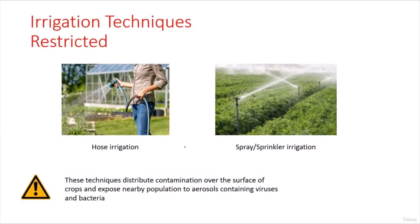Now let's check what irrigation techniques we can use when irrigating with treated wastewater. First, what are the restricted irrigation techniques? These are not purely restricted, but you are not advised to use hose irrigation, because there is direct contact between this water and the user — you might have a high risk of contamination if this wastewater is not well treated. The same applies to spray and sprinkler irrigation.